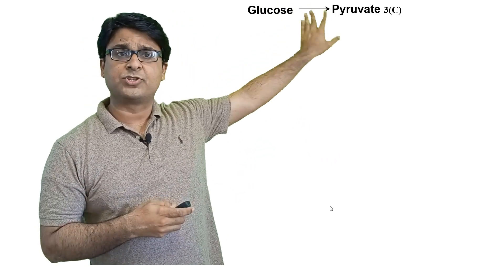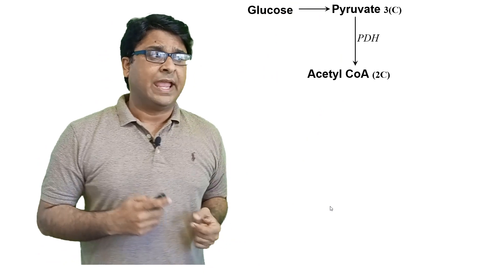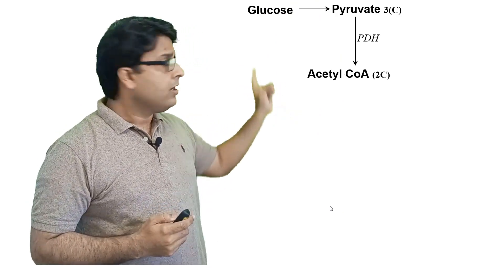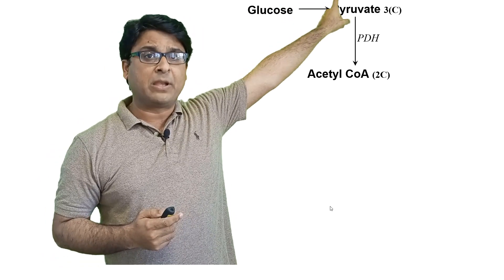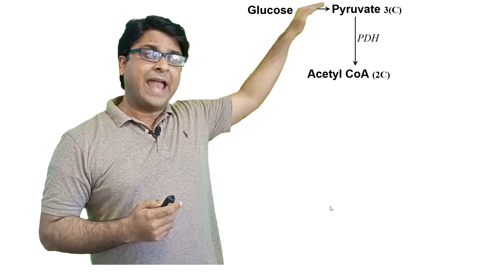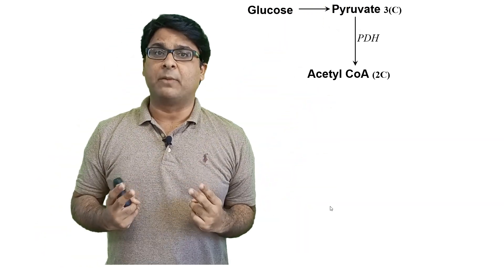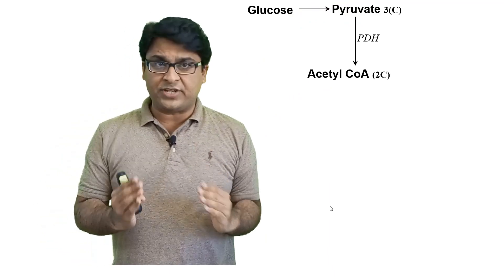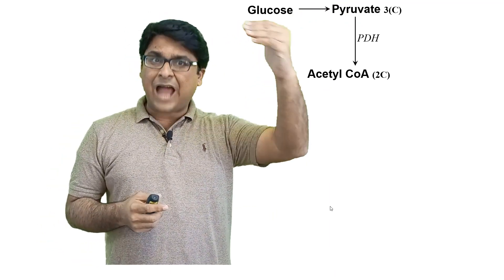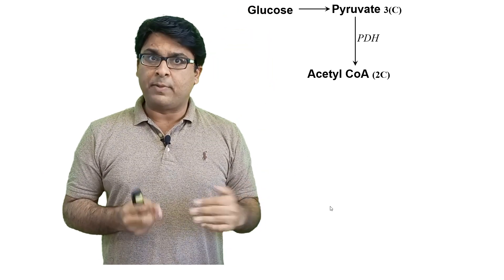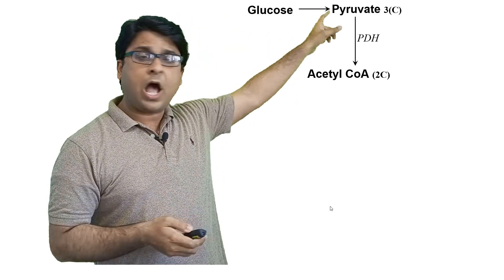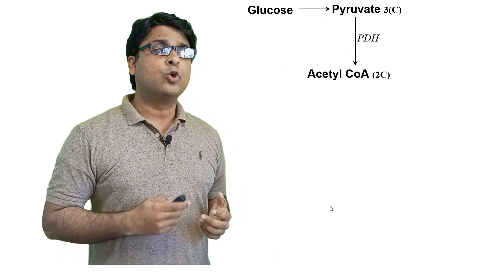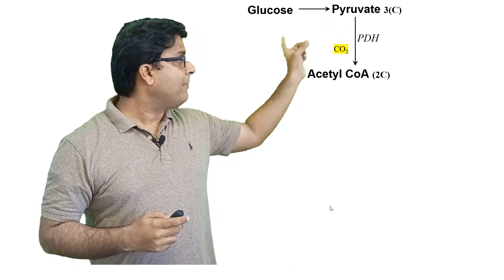Pyruvate, which is produced as a result of glycolysis, is converted into acetyl-CoA. Notice that pyruvate is a three carbon compound and acetyl-CoA is a two carbon compound. Whenever in metabolism you notice a change of carbon from a higher number to a lower number, that simply means one carbon has been removed, and when one carbon is removed it usually comes out in the form of carbon dioxide.